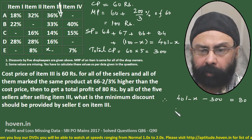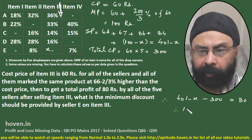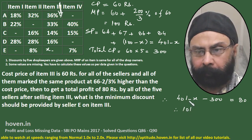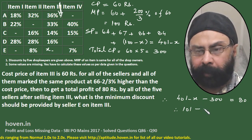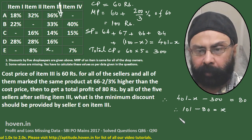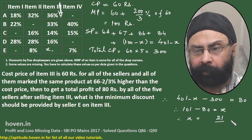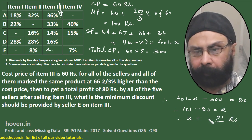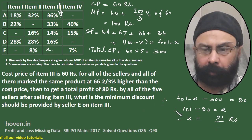Therefore: 101 minus X must be greater than or equal to 80. So X must be less than or equal to 101 minus 80, which equals 21. Therefore the minimum discount that seller E should provide is 21 percent, which is the required answer.